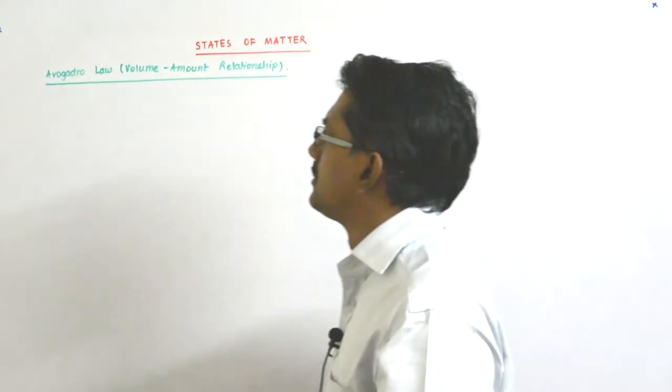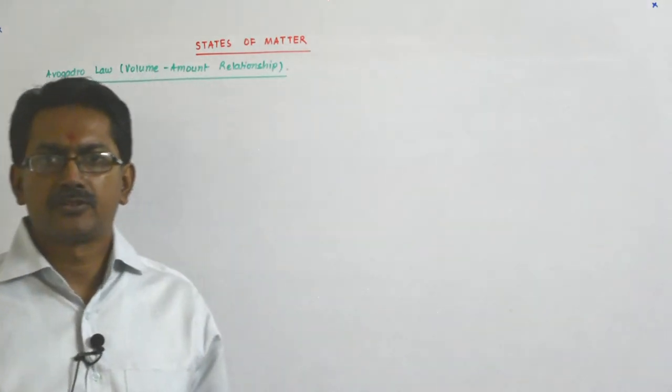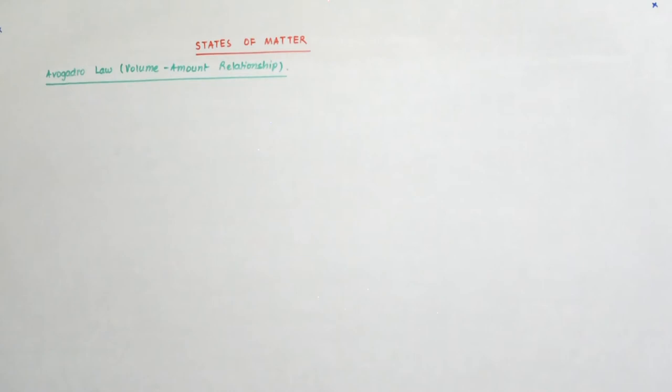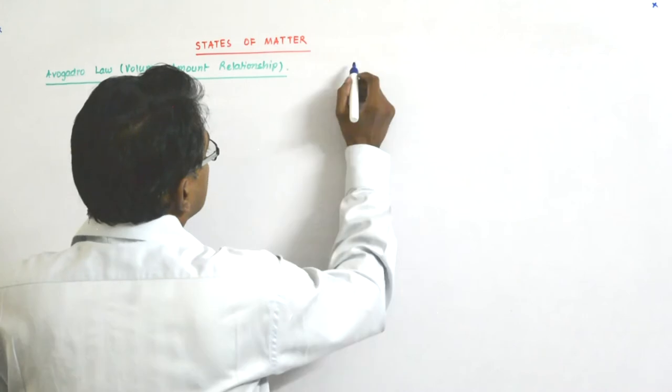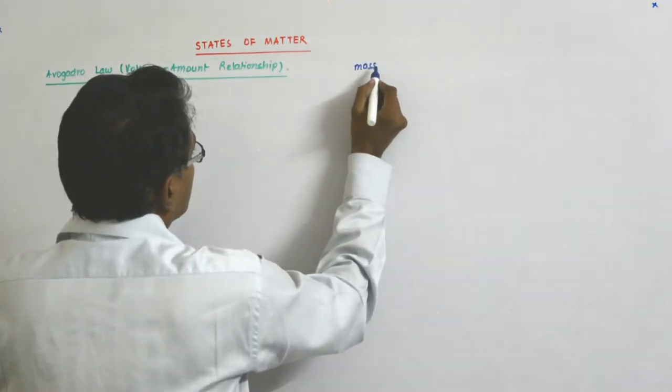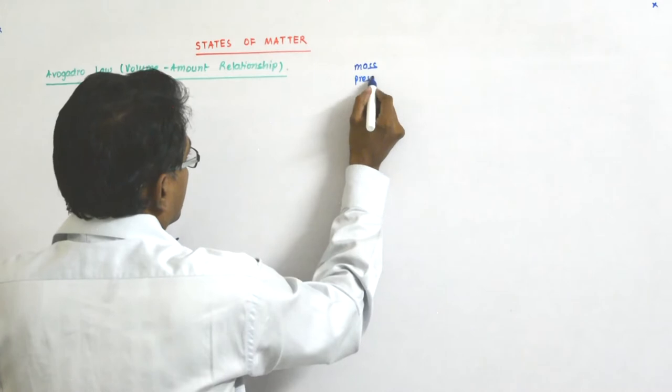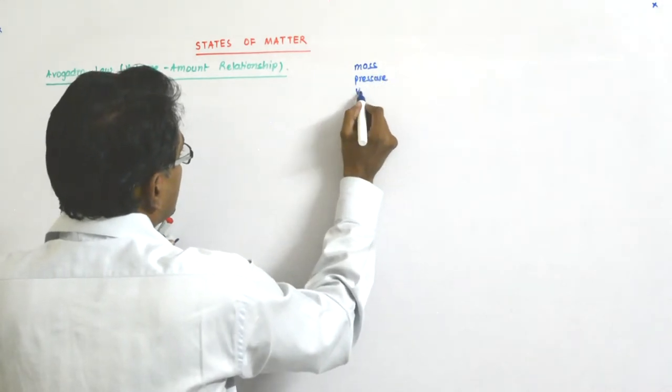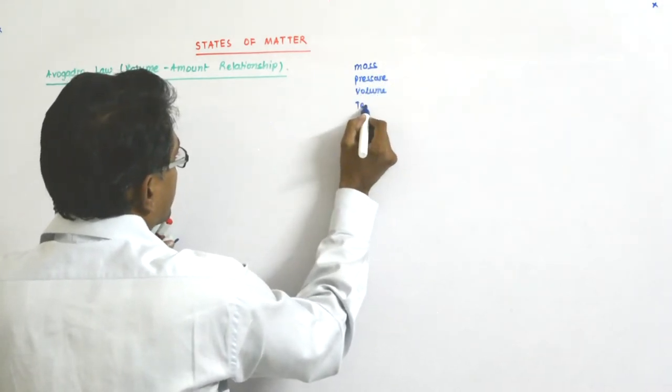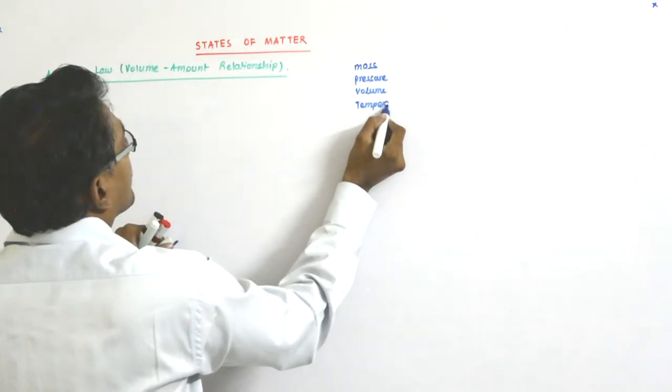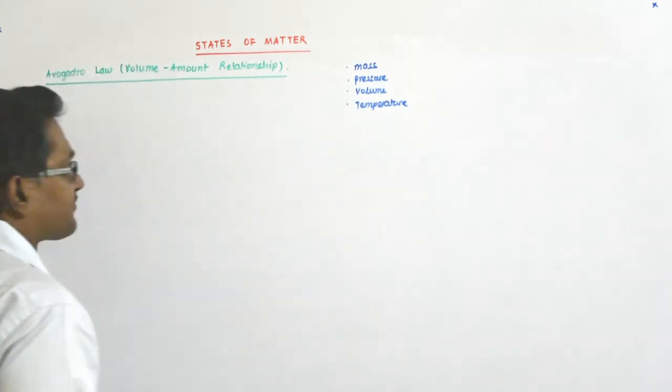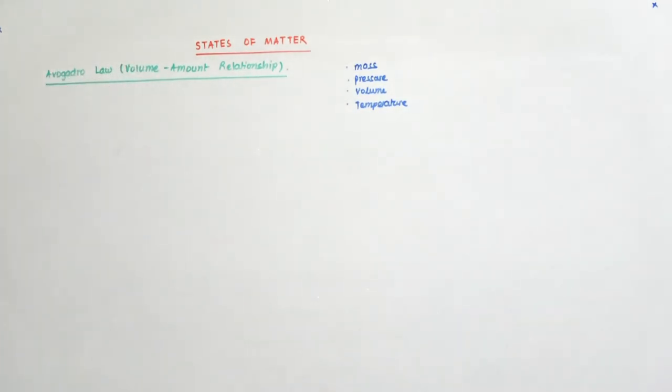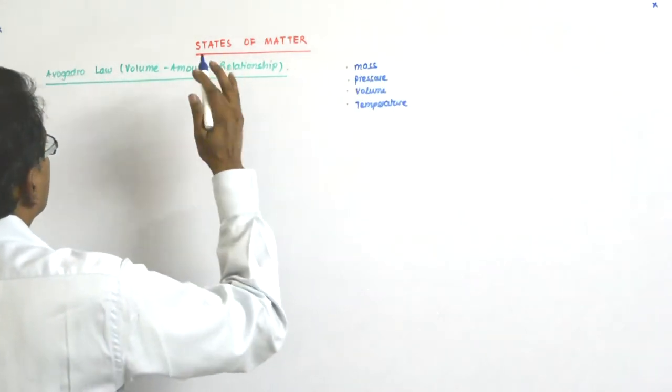Now we come to a new law called Avogadro's law, which is a volume-amount relationship. Till now we have been seeing mass, pressure, volume, and temperature. We have seen almost all, not all.